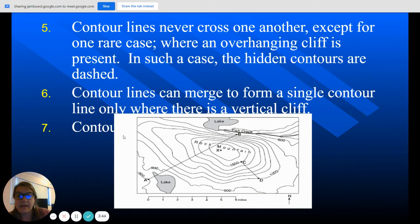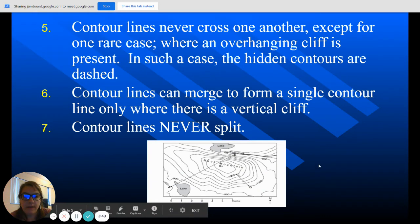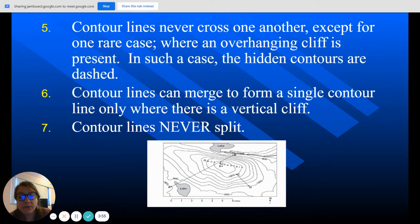And then number seven is not there. I fixed number seven. Contour lines never split. So the lines can get very close to each other and basically touch and that turns into a vertical cliff, but they never split in half.